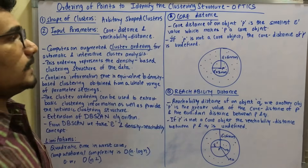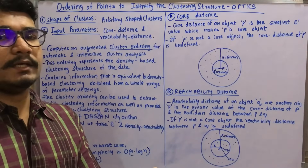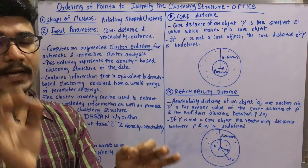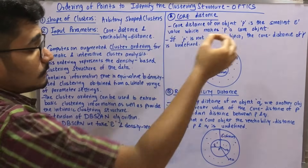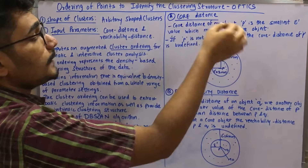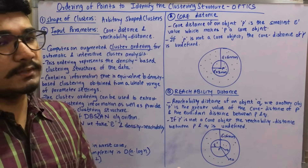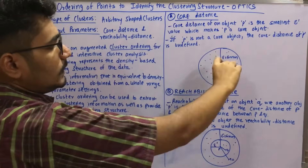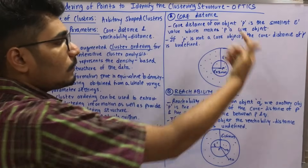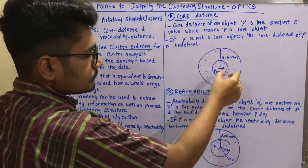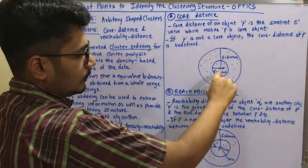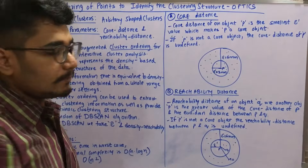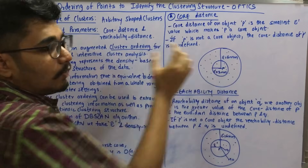The core distance of an object p is the smallest epsilon-dash value which makes p a core object. If p is not a core object, then the core distance of p is undefined. Using two concentric circles as an example: the inner circle has a radius of 3mm and the outer circle has a radius of 6mm. Since p is the core point, the core distance of p is epsilon-dash, which equals 3mm — the smallest distance.